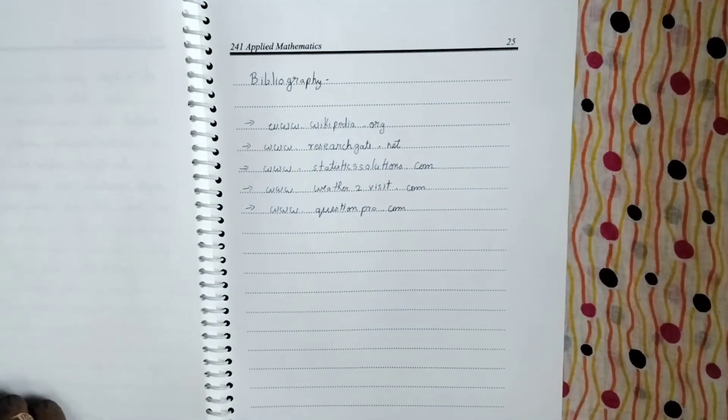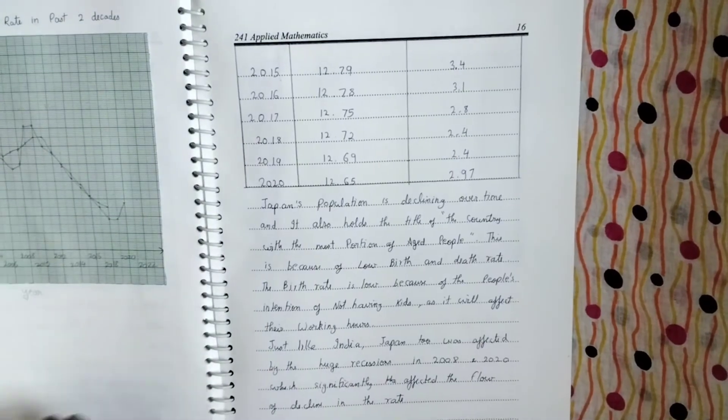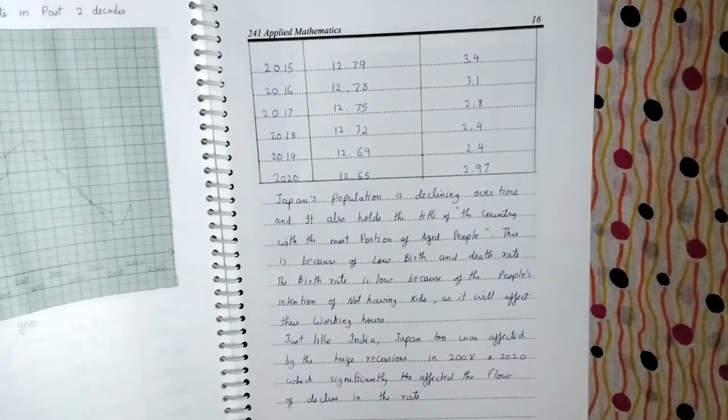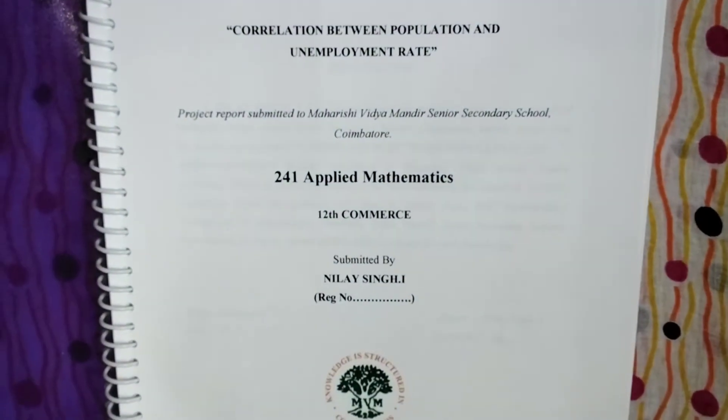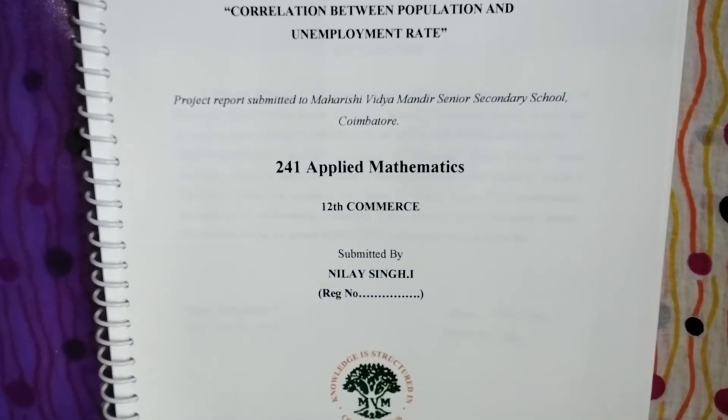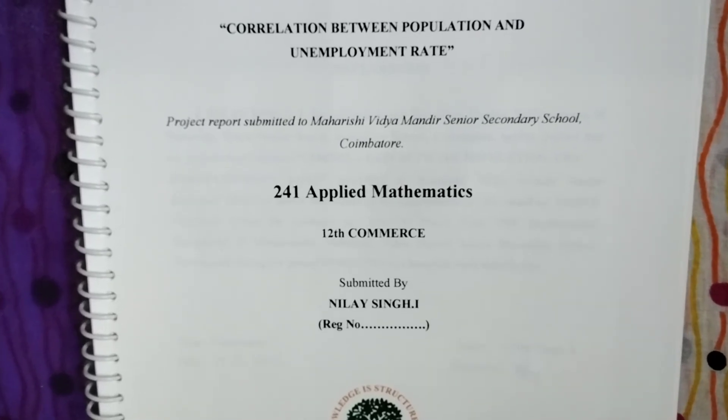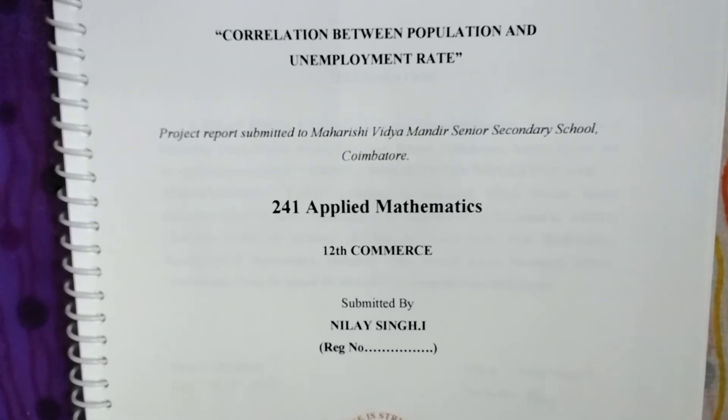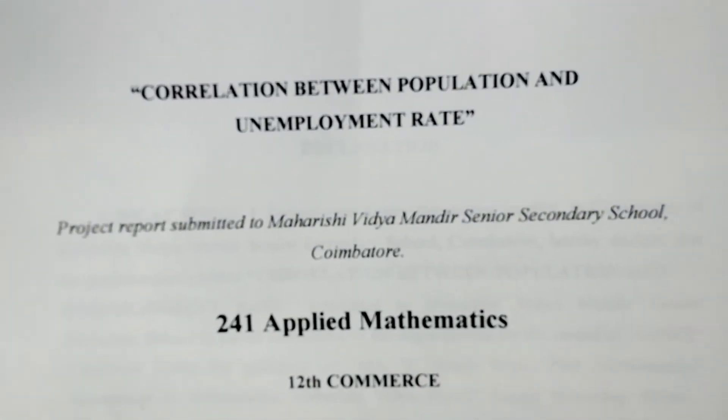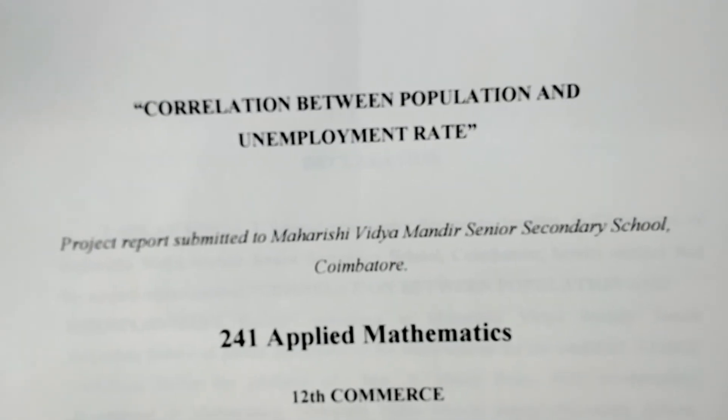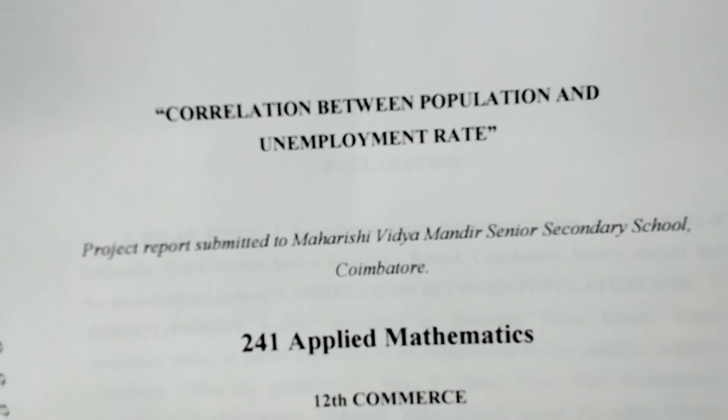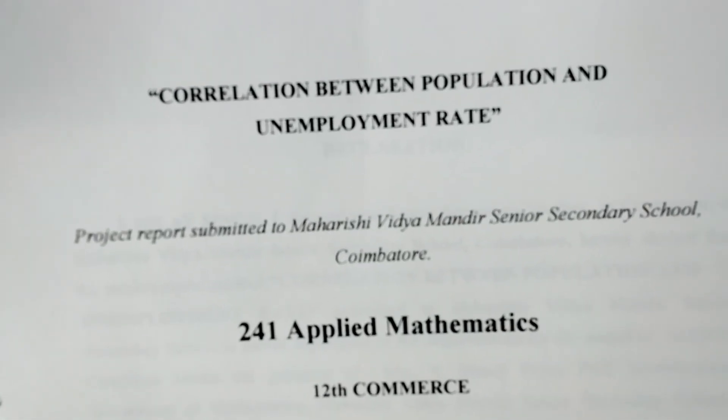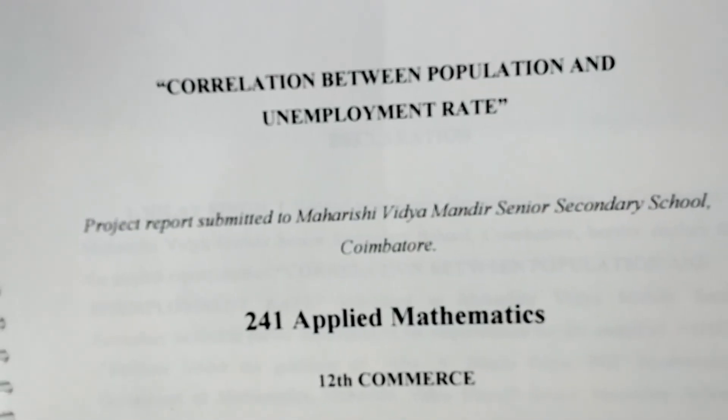So this is the project that the child has done for Applied Math. The topic is correlation between population and unemployment. And this is one sample. This is actually a project which has a lot of weightage. It's an exploration project what he's done. It is just like a research paper that he's done. And it has high further scope of study. So you can use this as a sample and you can make your project based on this. Thank you.